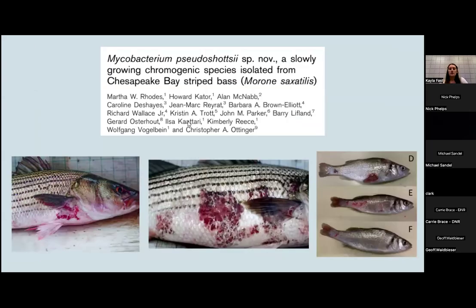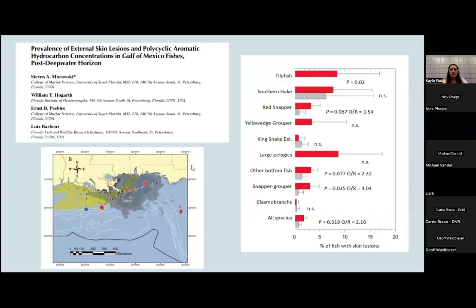Mycobacterium ulcerans ecovar was determined to be the causative agent of skin lesions in striped bass in the Chesapeake Bay. Following the Deepwater Horizon oil spill, there were anecdotal reports of fish with increased skin lesions. Here on that map on the bottom, you can see the red and blue are fish found with skin lesions and their proximity to the oil spill. On the right are the groups of species that were sampled in the project.